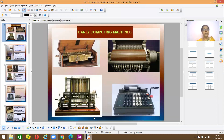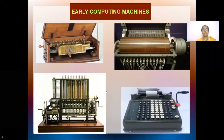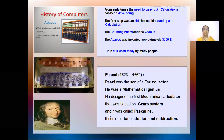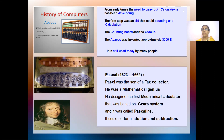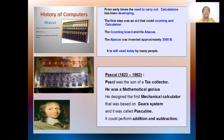These are called the early computing machines. You can see how old these machines look. They don't even look like computers, but basically they are used for calculations. The very first machine that was developed for calculations — simple mathematical calculations of addition and subtraction — was called the Abacus.